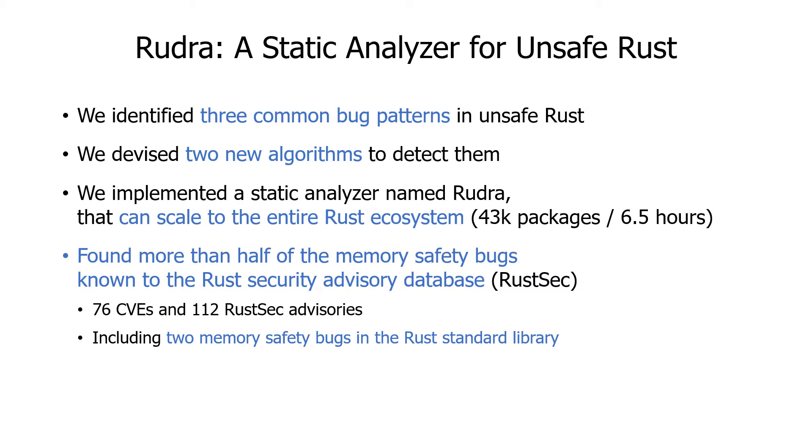So far, Rudra found more than half of the memory safety bugs known to the Rust Security Advisory Database. These bugs are found in code bases written and extensively reviewed by Rust experts. Let me first start by explaining the three bug patterns.